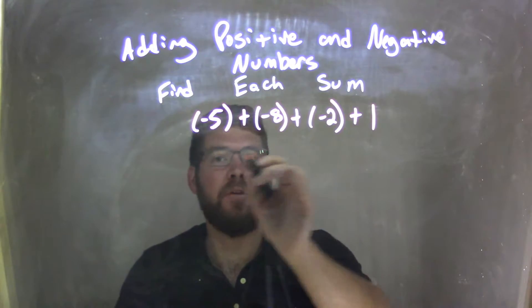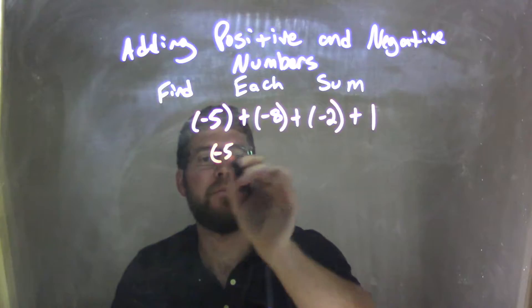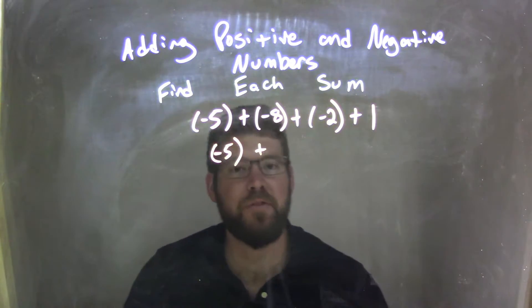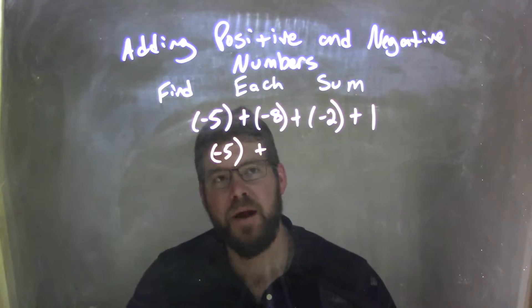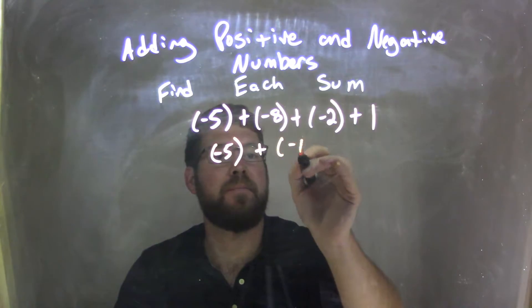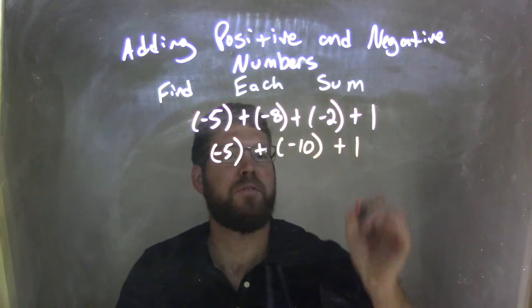Let's do that first. We bring down the negative 5, and then we're going to add negative 8 plus negative 2. That's more in the negative direction, which is negative 10. And then we have the plus 1.